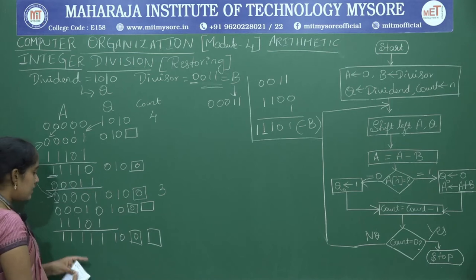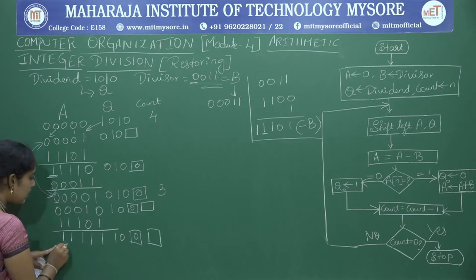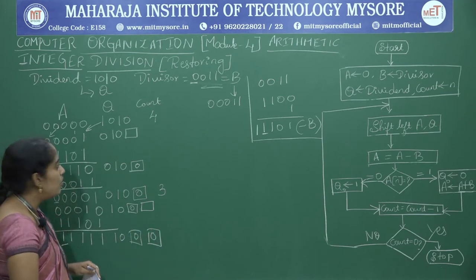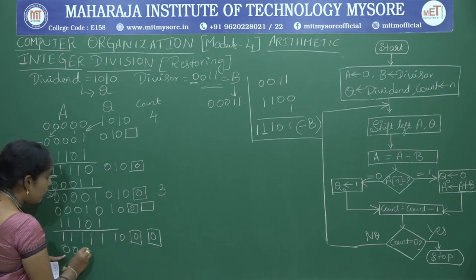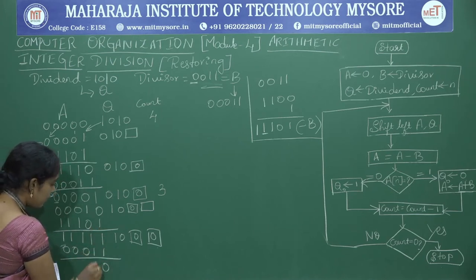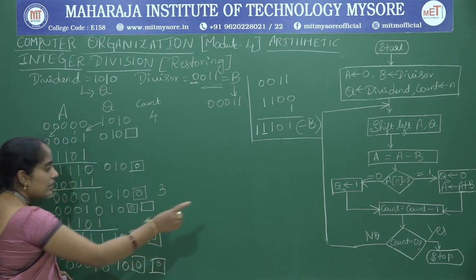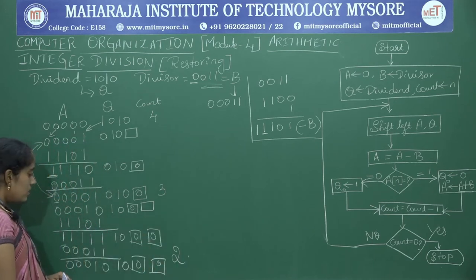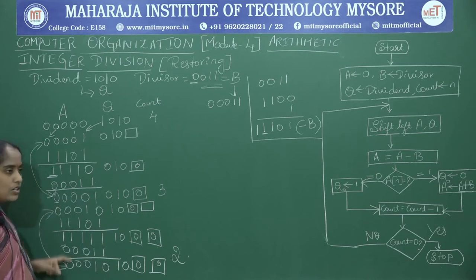Check the sign bit of A — it is 1 again. So set Q0 to 0 and restore A: A equals A plus B. Add 00011 to A: result is 00010, with Q showing 0000. Decrement count: count is now 2. The restoring of A is verified.